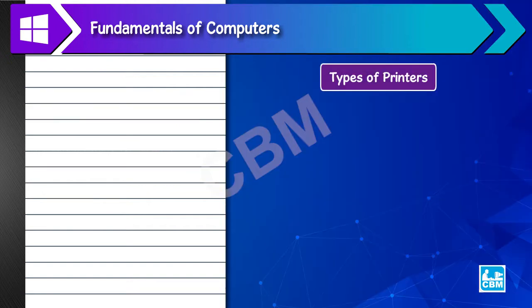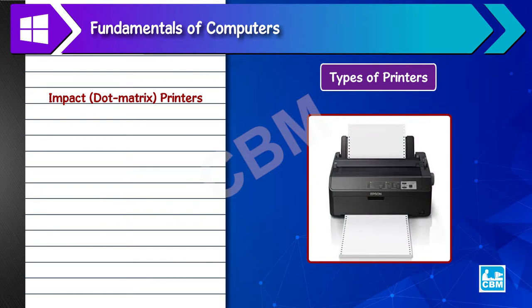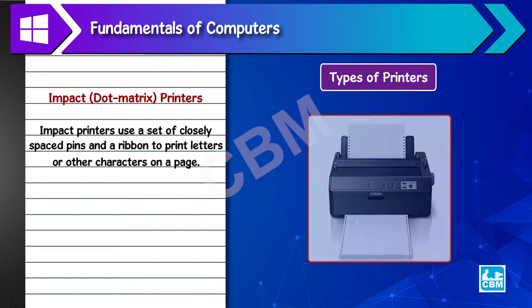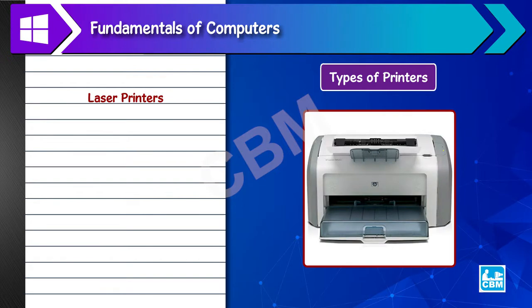Types of printers: Impact, dot matrix printers - Impact printers use a set of closely spaced pins and a ribbon to print letters or other characters on the page. Laser printers - Laser printers operate by shining a laser beam to produce an image.